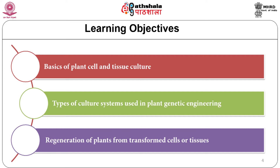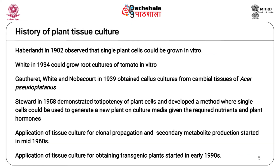The ability to grow plant cells in isolation on a nutrient media was explored as early as 1902 by Heberland, and this idea laid the foundation for research and culture of plant cells and tissues. Root cultures and callus cultures were obtained from various plants. It was in 1958 that FC Stewart demonstrated the totipotency of plant cells and was able to generate a new plant from single cells placed on appropriate media containing nutrients and growth hormones. The techniques of tissue culture were well established in the 1960s and were exploited for clonal propagation of plants as well as for obtaining secondary metabolites of pharmaceutical importance.